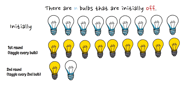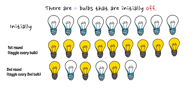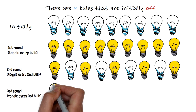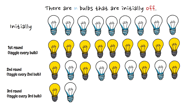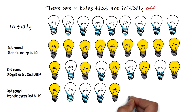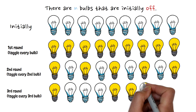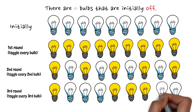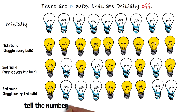In the second round we have to toggle every second bulb, so the second, fourth, sixth, eighth bulbs are toggled off. In the third round we toggle every third bulb, so the third and sixth bulbs are toggled, and so on. We have to find the number of bulbs that are on after n rounds.